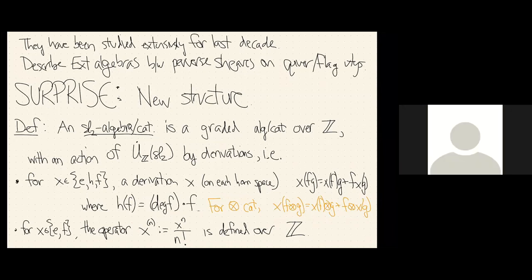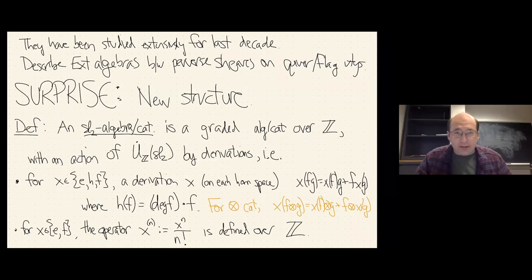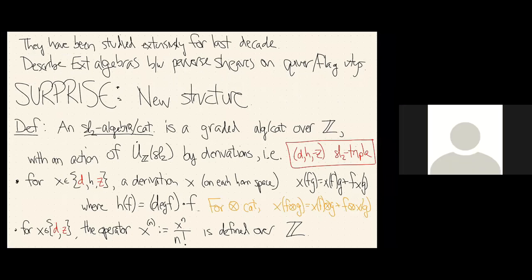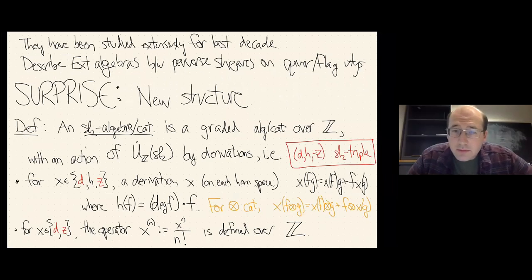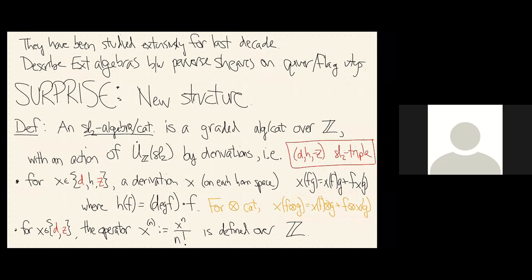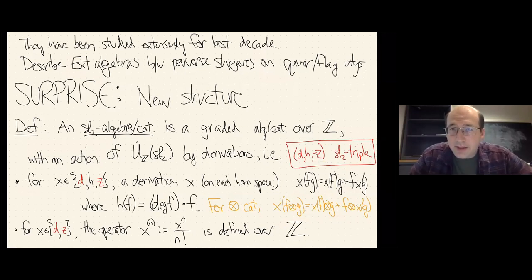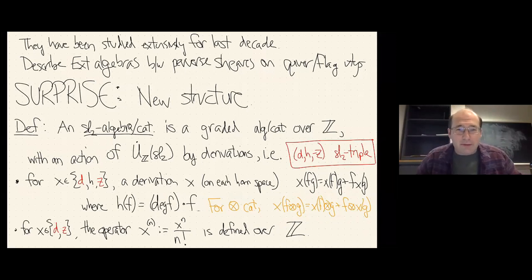Audience question: if the category acts by derivation, do you mean a direct sum? Speaker clarifies: F and G are morphisms. It's acting on morphisms. I like to name my operators D and Z, where Z is essentially the lowering operator. D is there for historical reasons — everyone called it D before, and F, X, and everything else were too overloaded.